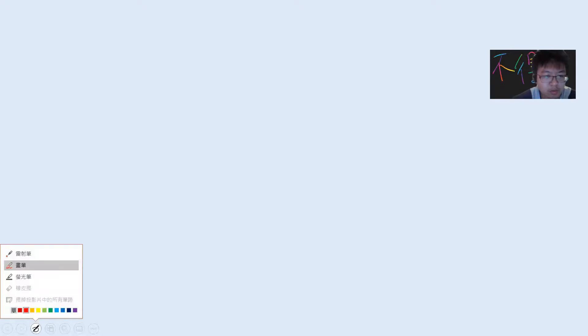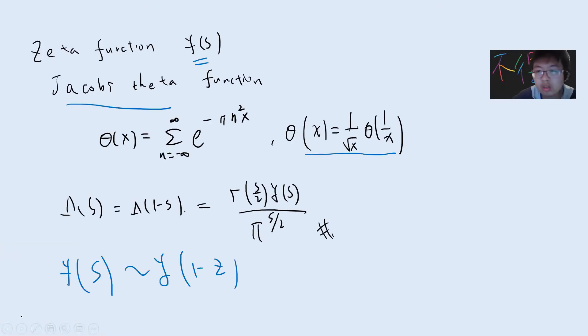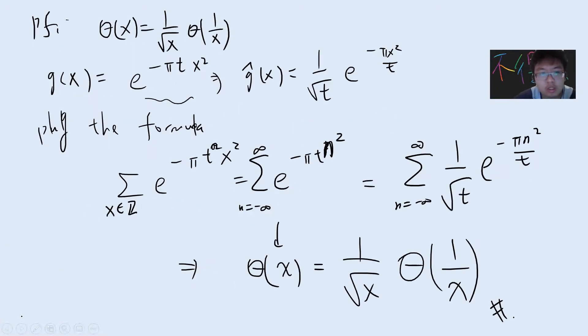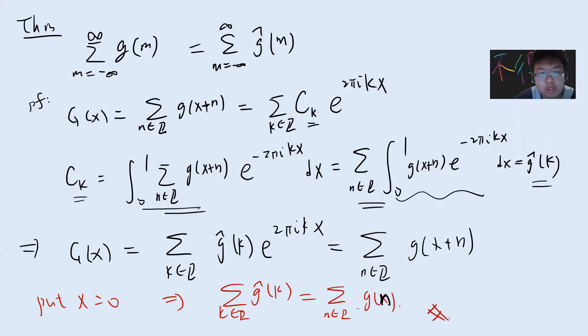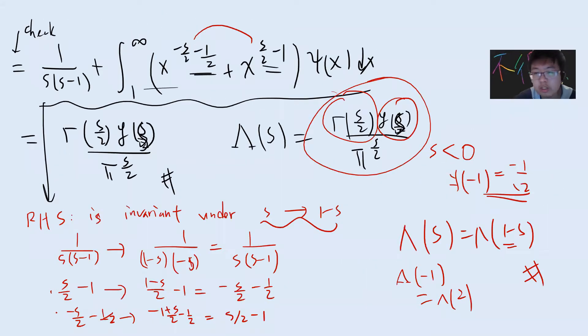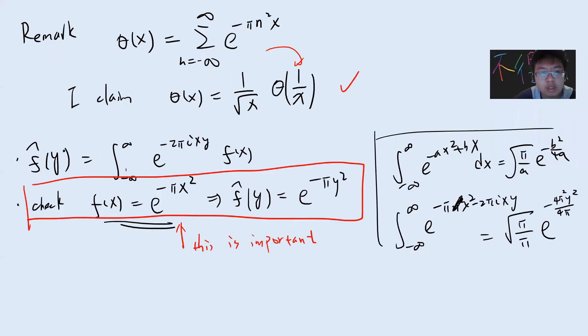Hey, what's up guys. So this is my final analytic number theory video, and the topic I want to talk about is the contour analytic continuation for the zeta function. Let me just recall the previous result where we get the analytic continuation.